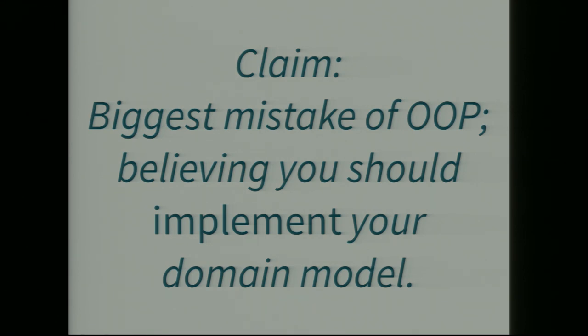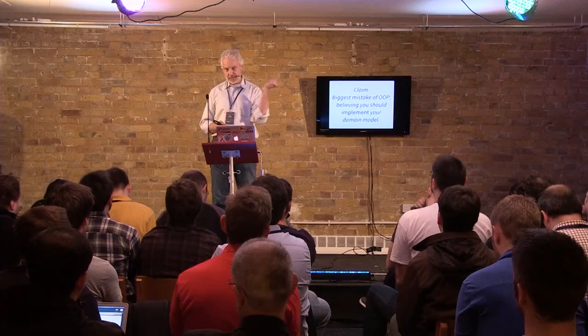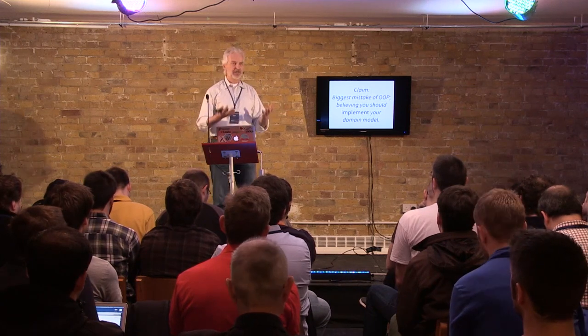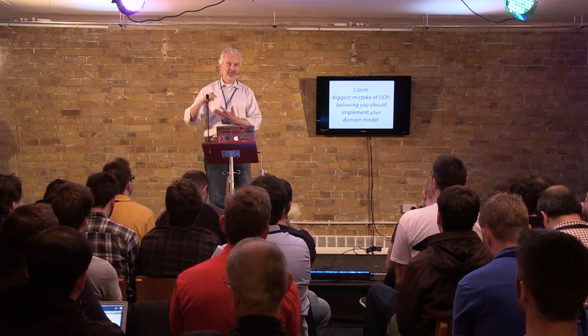The biggest mistake that object-oriented programming made was this notion that you should actually implement your domain model. This was considered such a great idea that none of us questioned it for years. But it's not the simplest thing that could possibly work. The simplest thing would be: I'm just taking a wad of data, passing it through some processing, and spitting out another wad of data at the end. I don't really care if it's representing a person or some payroll — I just have numbers and I'm slogging them around.